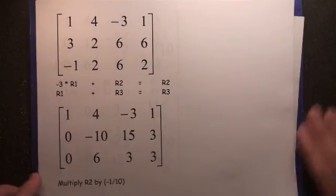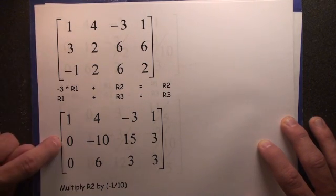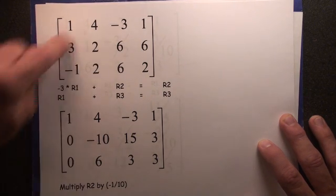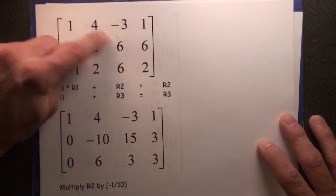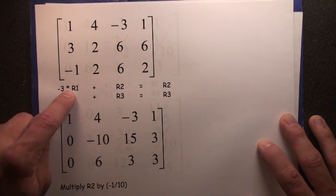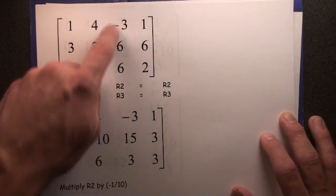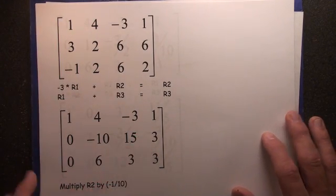Real quick, just to show you: negative 3 times 1 is negative 3, plus 3 is 0. Negative 3 times 4 is negative 12, plus 2 is negative 10. Negative 3 times negative 3 is positive 9, plus 6 is 15, yes. Negative 3 times 1 is negative 3, plus 6 is 3. Okay, that's how that all works.